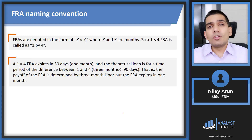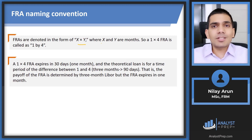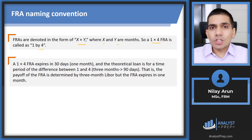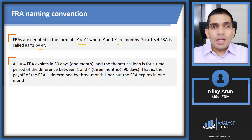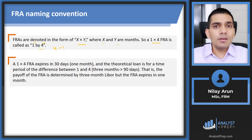The naming convention is quite unique to FRAs. FRAs are denoted in the form X×Y, read as 'X by Y,' where X and Y are months. For example, a 1×4 FRA means we are entering into a forward rate agreement. The theoretical loan between the lender and borrower starts at time period one and continues until time period four, so the actual loan period is four minus one — three months.